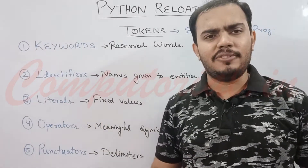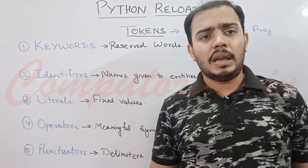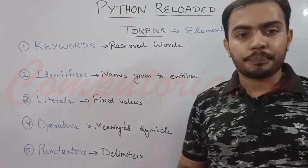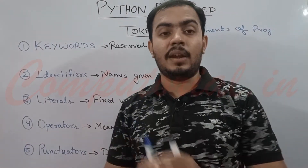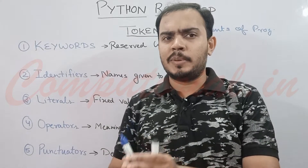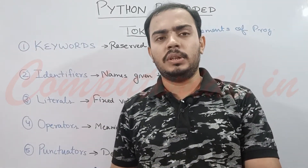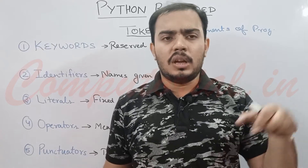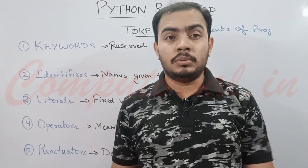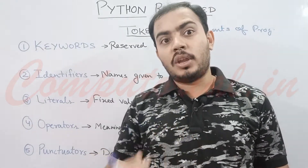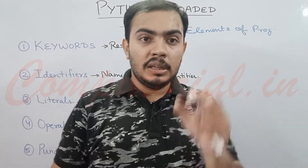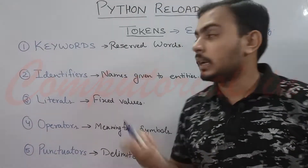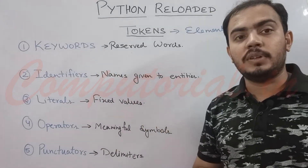Let's understand what each of these five are, and then we will talk about each one in detail. The first one is keyword. Keywords are the reserved words of the programming language. When you write a sentence in English grammar, you have verbs, adverbs, prepositions — these keywords are similar to those fixed words in a sentence. In Python, those fixed words that you use in your code sentences are called keywords, or reserved words of Python.